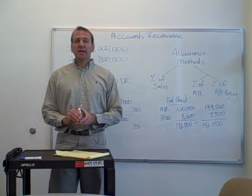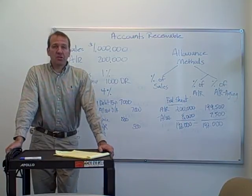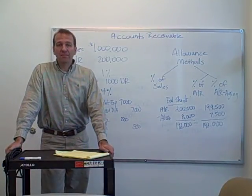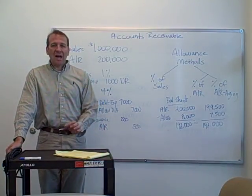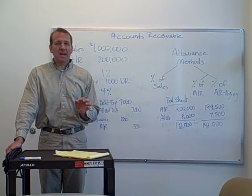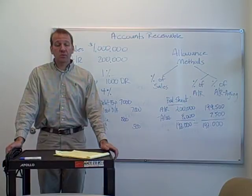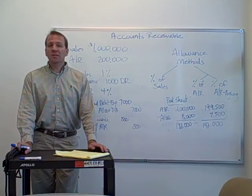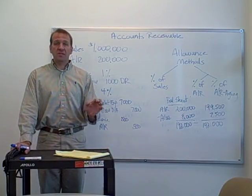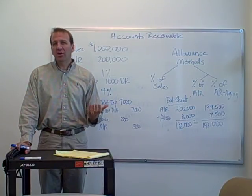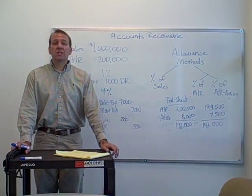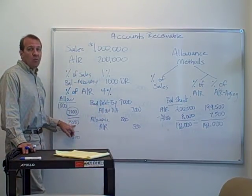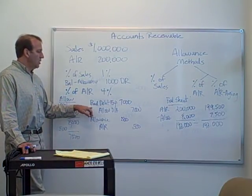This is probably the toughest chapter in the textbook. You have to understand how the percentage of sales works inside and out, then move on to percentage of accounts receivable. They're similar but there's a big difference: with percentage of sales, the calculated amount is your adjustment. With percentage of accounts receivable, that amount is your ending balance — so you have one more step to back into your year-end adjustment.